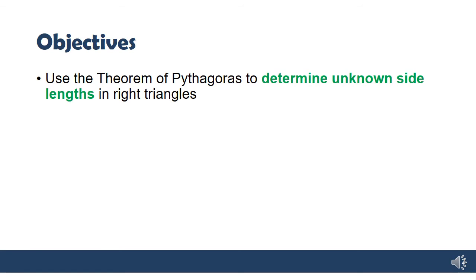All you need to know in the Theorem of Pythagoras this year in Grade 9 is really just a revision of what you did last year in Grade 8. You're using the Theorem of Pythagoras to determine the unknown side length in right triangles.